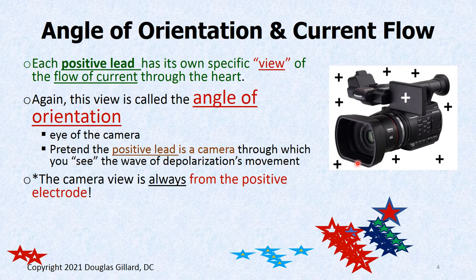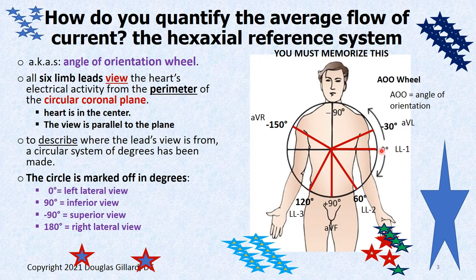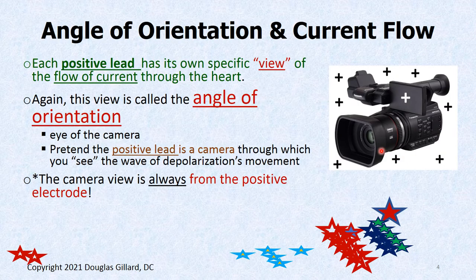The angle of orientation — that is the camera's eye. For example, let's draw limb lead two right here. So if we drew a camera down here, there's limb lead two and its camera. Its angle of orientation is a straight line coming out of that camera — specifically, it's 60 degrees from a horizontal line. That's important because we're going to draw a perpendicular on that to figure out the exact flow of current through the heart.